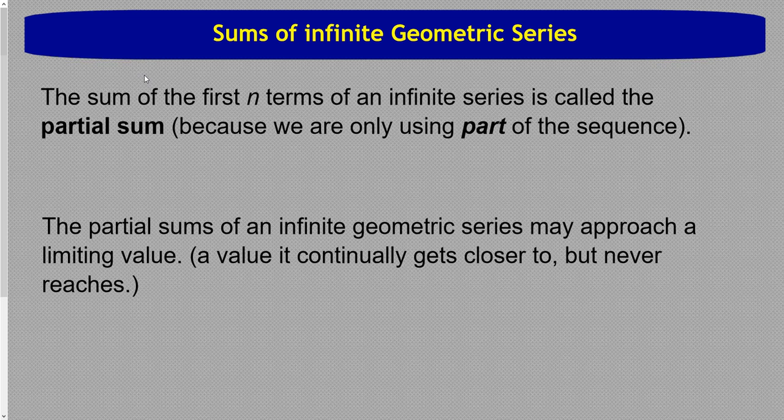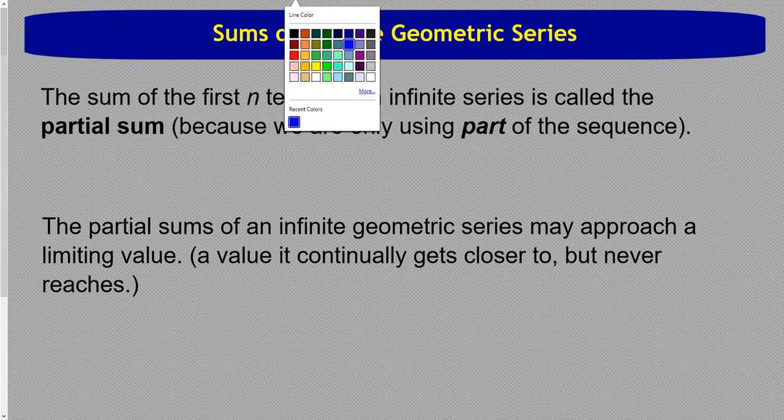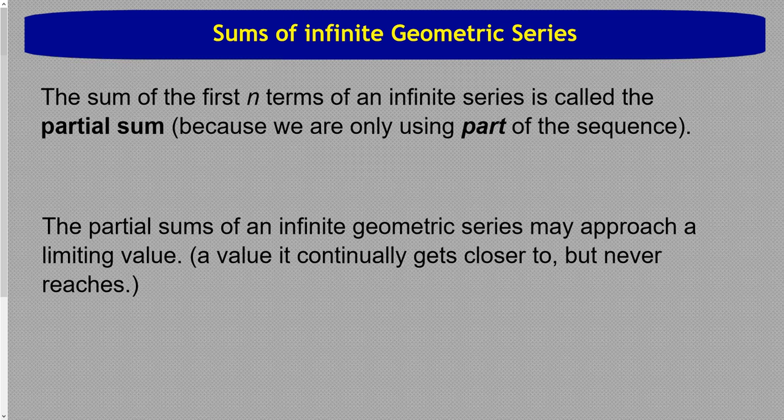Normally when we find the sum of a geometric series, we're finding what's called a partial sum, because we can't find the sum of something that's infinitely large most of the time. So we find what's called a partial sum, which is just the first n terms of the series. It might be the first 12 terms, it might be the first 8,000 terms, but we usually can't find it.